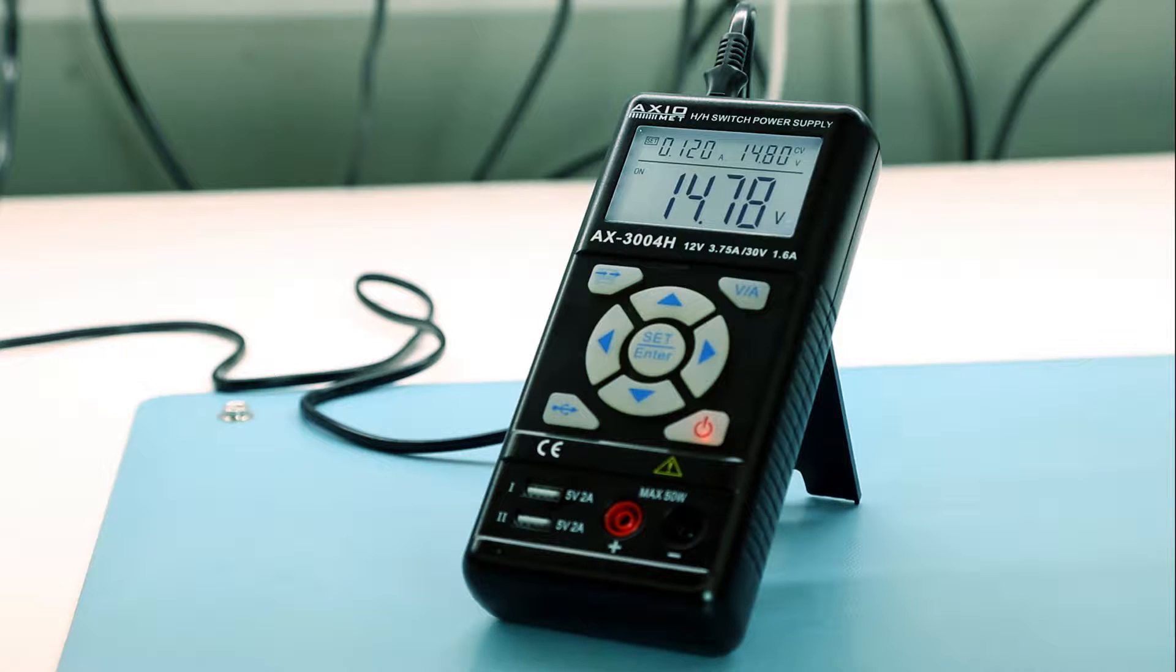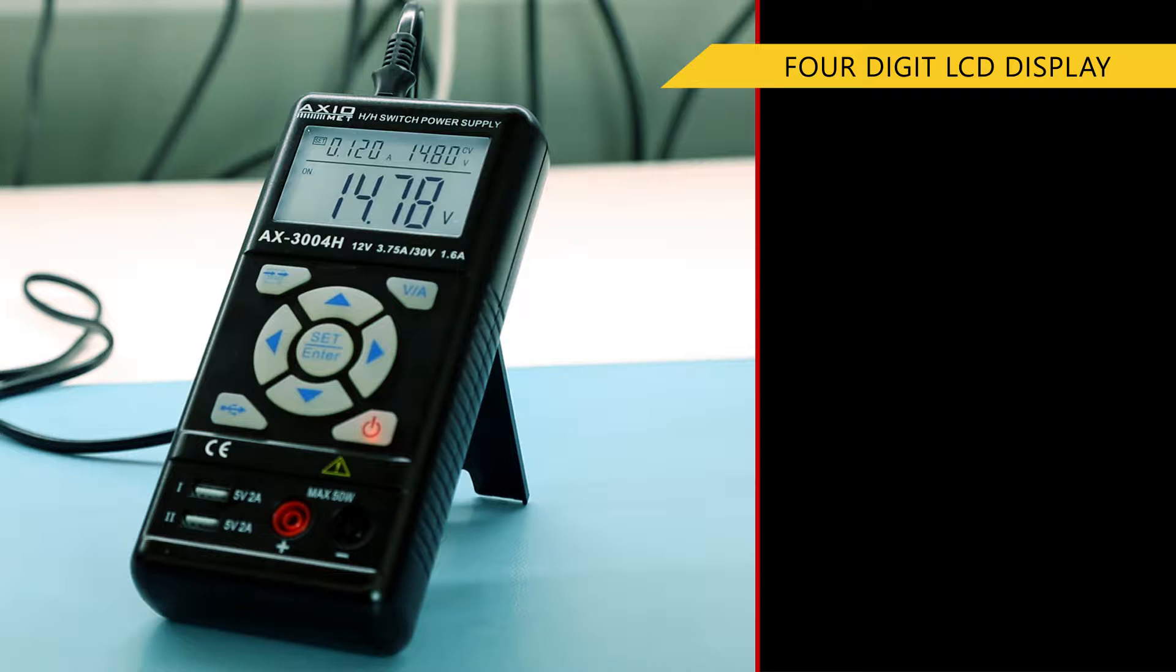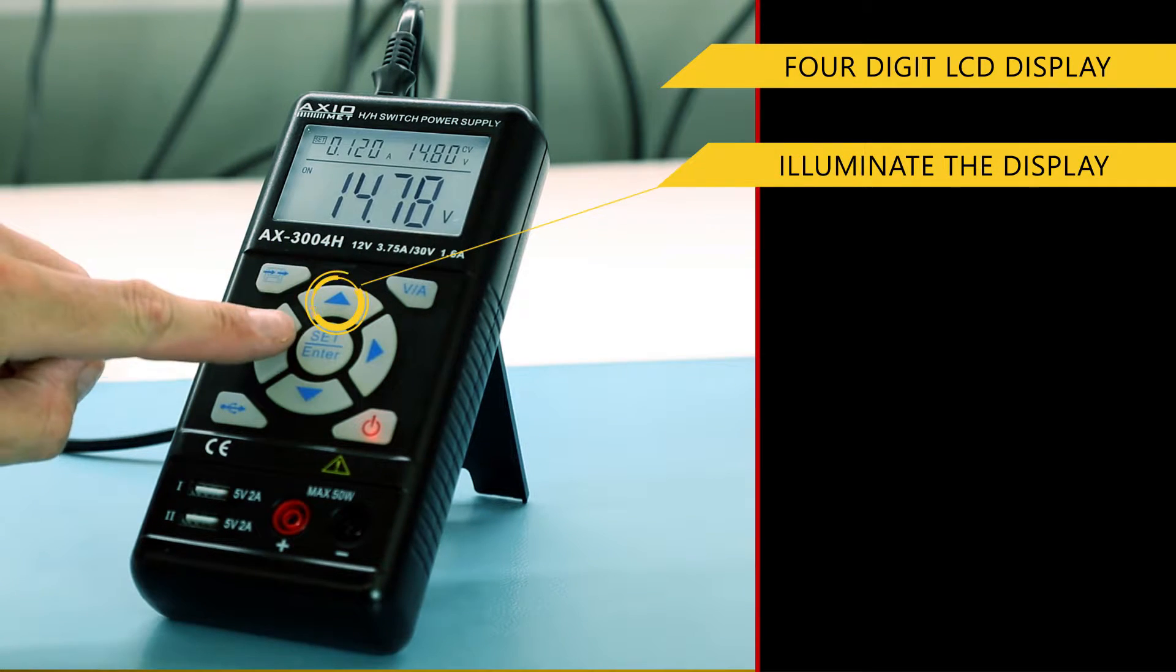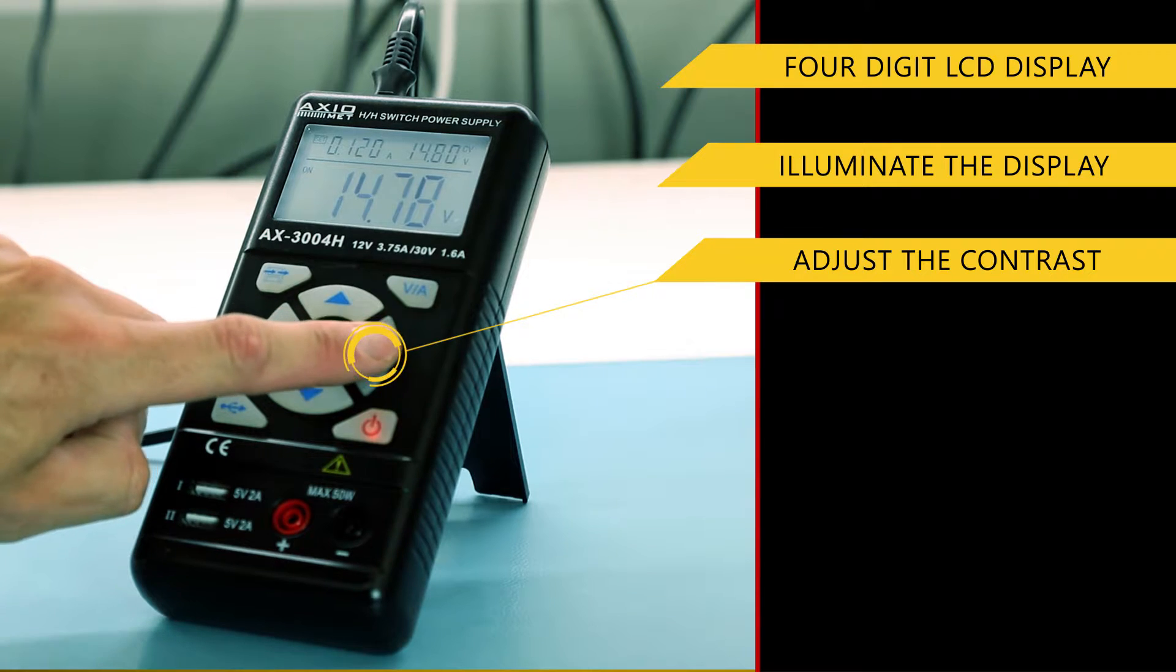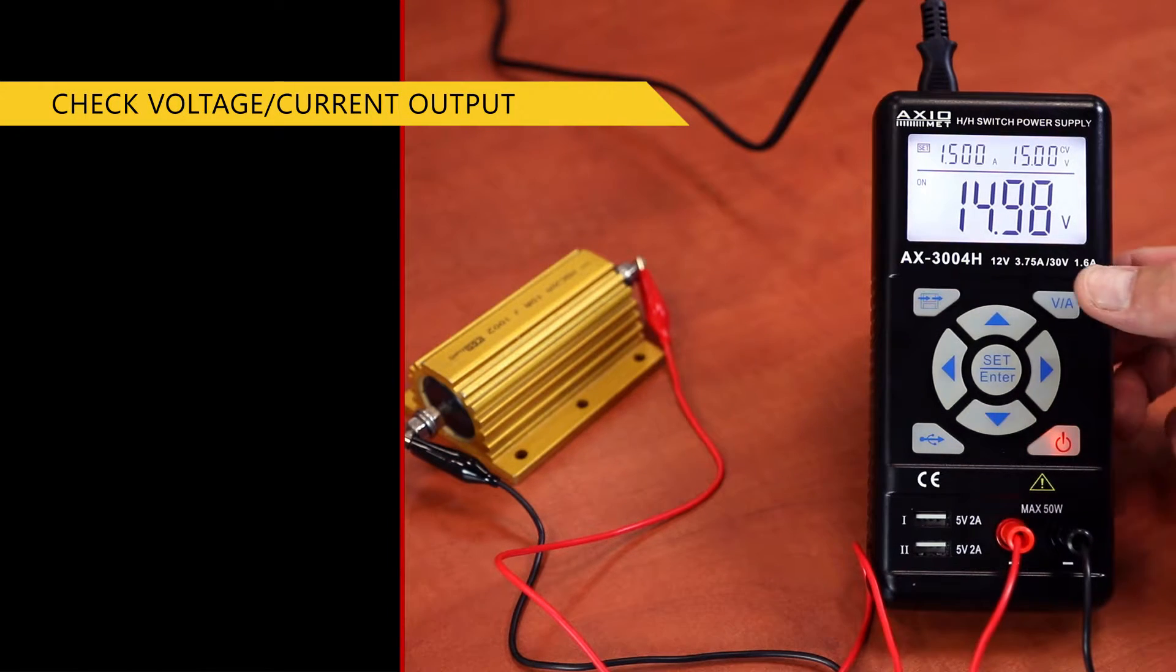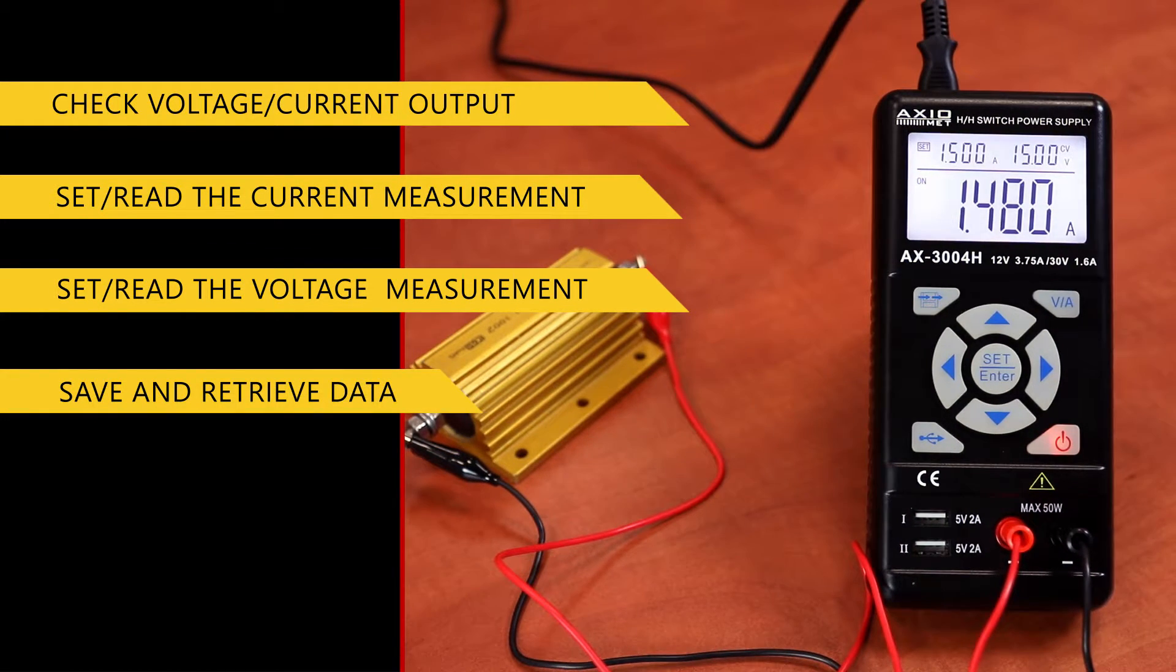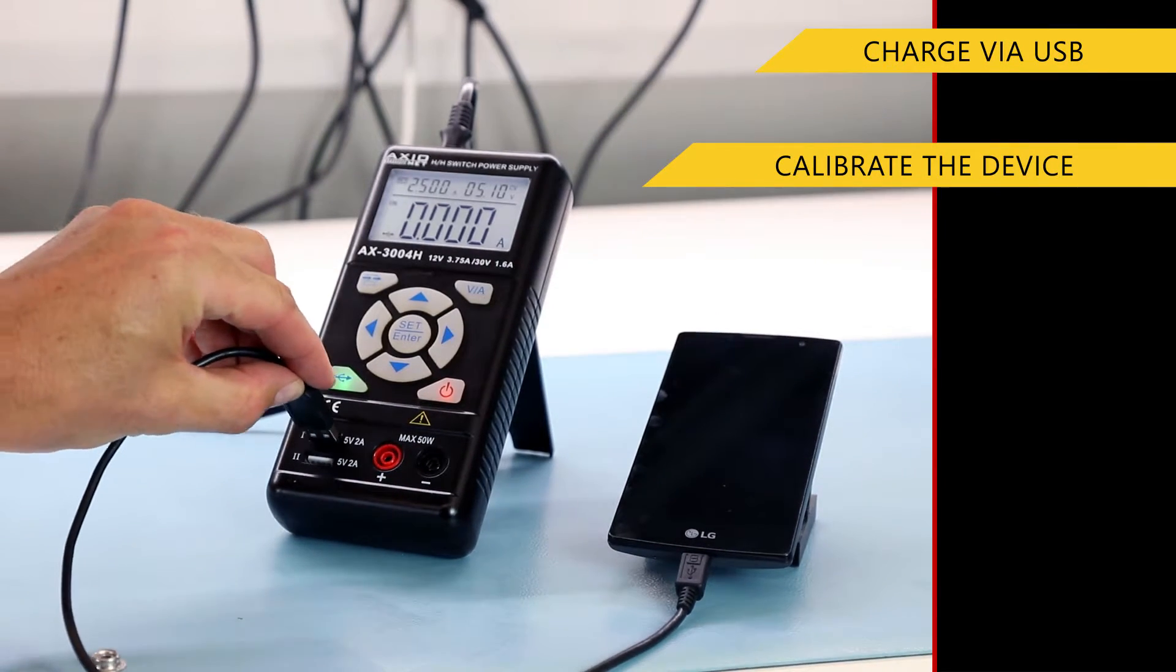The power supply has a large backlit black and white four digit display and a backlit user interface with a set of buttons that allows you to illuminate the display, adjust the display contrast to your preference, check the selected voltage or current output, set and read the current or voltage measurements, save and retrieve data, charge via USB, and calibrate the device.